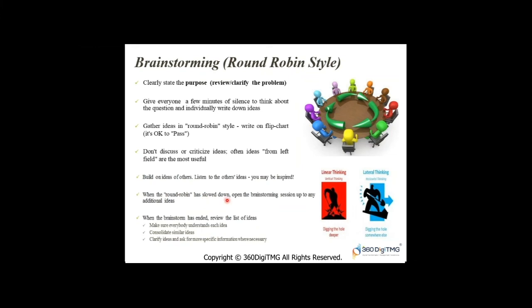When the round-robin slows down, open the brainstorming session to additional ideas where anyone can throw in an idea freely. When brainstorming has ended, review the list of ideas generated, make sure everybody understands each other's ideas, consolidate similar ideas (you can use an affinity diagram), and clarify ideas by asking for more specific information where necessary. Do not hesitate to clarify the ideas.